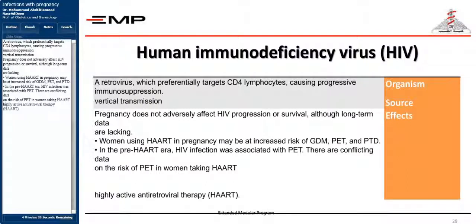HIV is a retrovirus which preferentially targets CD4 lymphocytes, causing progressive immunosuppression, transmitted vertically. Pregnancy does not adversely affect HIV progression or survival, although long-term data are lacking. Women using HAART in pregnancy may be at increased risk of gestational diabetes mellitus (GDM), pre-eclampsia (PET), and preterm delivery (PTD). In the pre-HAART era, HIV infection was associated with PET, and there are conflicting data on the risk of PET in women taking HAART.